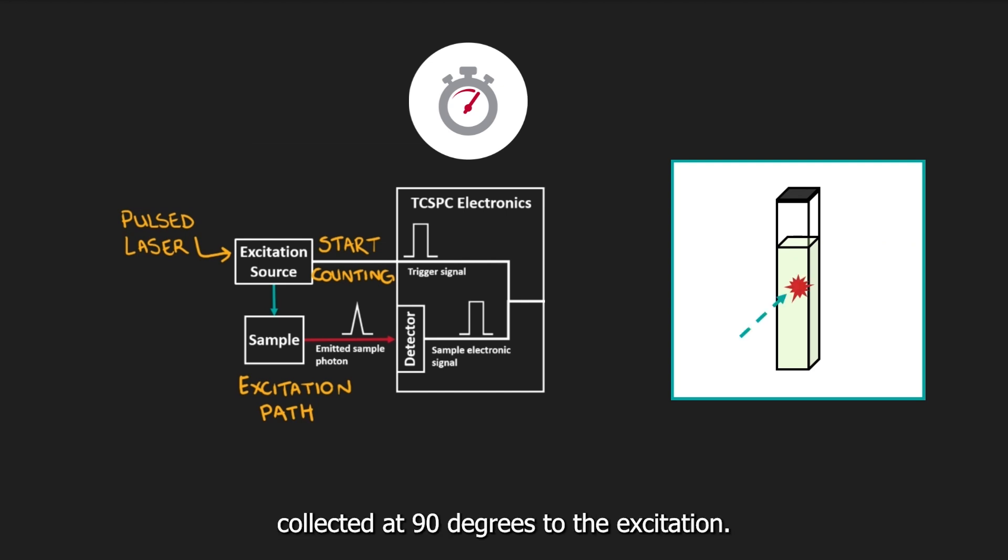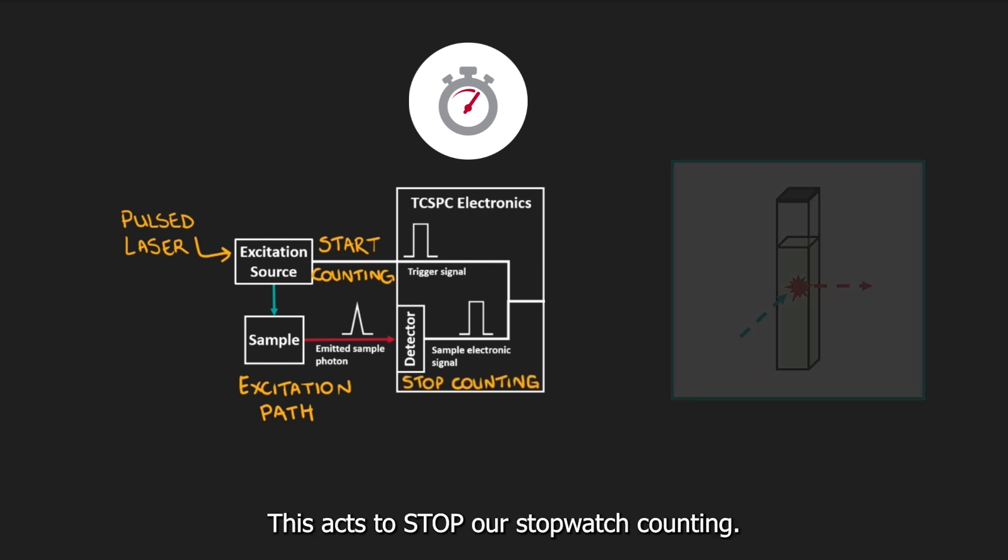The emission is collected at 90 degrees to the excitation. The emitted photon hits the detector and is converted into an electronic signal. This acts to stop our stopwatch counting.